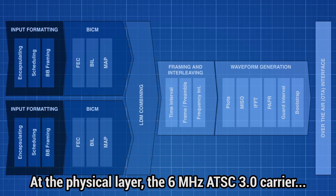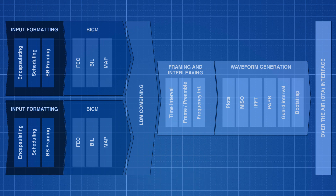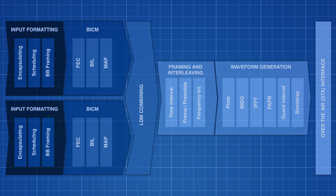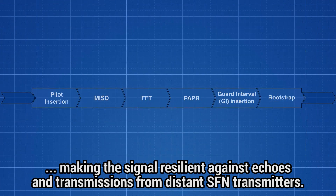At the physical layer, the 6 MHz ATSC 3.0 carrier is split into thousands of non-interfering subcarriers by using COFDM. A guard interval is used after transmission of each set of symbols in order to make the signal resilient against echoes and transmissions from distant transmitters under SFN network operation.